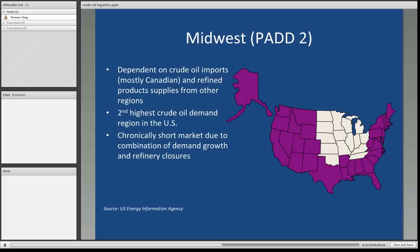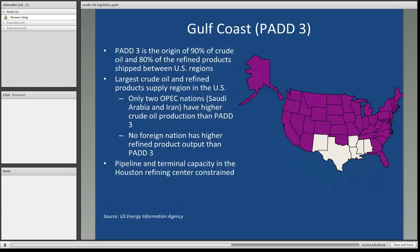The Northeastern part of the United States is the world's largest consumer of heating oil, a product refined from crude oil. PAD 2 encompasses the upper Midwest and central states. They are dependent on crude oils that mostly come from Canada — the largest supplier of crude oil to the United States. This region has the second highest crude oil demand in the United States, and they are chronically short the market due to a combination of demand growth and refinery closures.